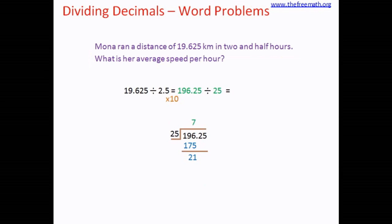Because 75 plus 20 is 95, that means 75 plus 21 equals 96. Now the whole number part of the division is done, so we write the decimal point in the quotient and bring down 2. 25 eights are 200, the remainder is 12. Now we bring down 5, and 25 fives are 125, the remainder is 0. So our answer is 7.85. That means Mona's average speed per hour is 7.85 kilometers per hour.